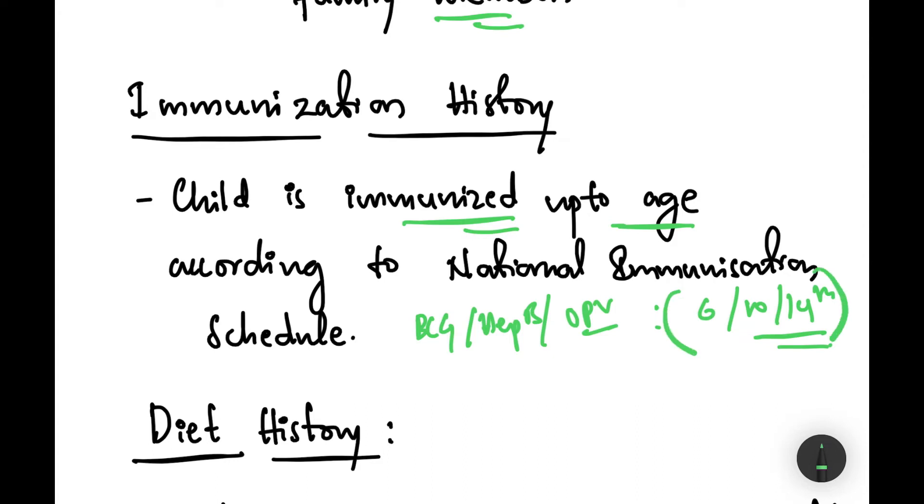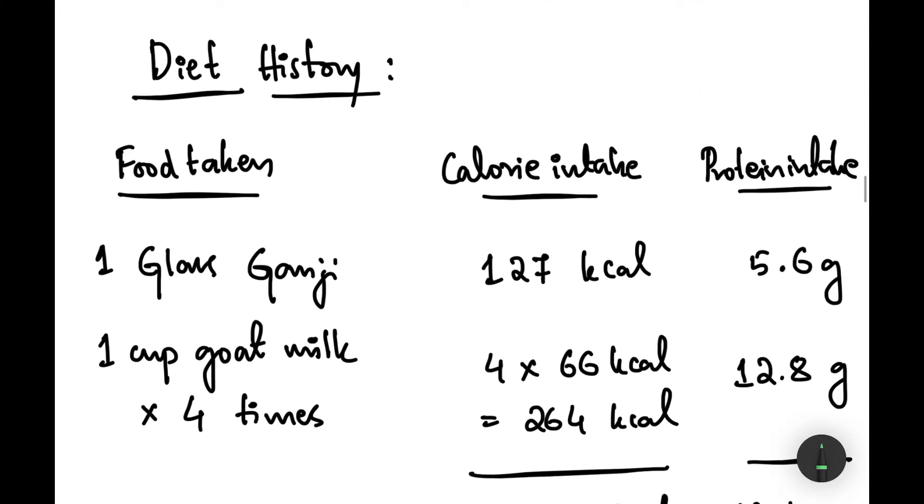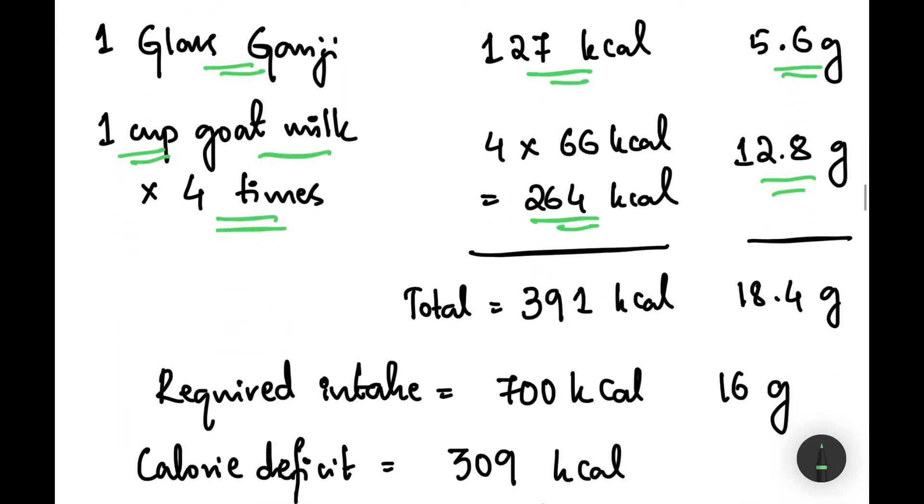Moving on to the diet history, the baby takes one glass of ganji with calorie intake of 127 kilocalories and protein intake of 5.6 grams. It also takes one cup of goat milk fed four times a day with total calorie of 264 kilocalories and protein intake of 12.8 grams. So the total calorie intake is 391 kilocalories with 18.4 grams of protein.